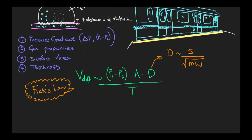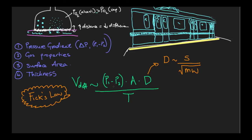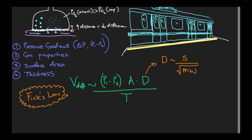So what have we covered? We have the alveolar-capillary membrane and the factors affecting diffusion across it: the pressure gradient; the properties of the gas in terms of solubility and molecular weight; surface area, where increasing size leads to more diffusion; and thickness, which corresponds to the speed of diffusion. We've put these together into Fick's Law — an important framework for thinking about gas exchange and how it can be affected by disease states.